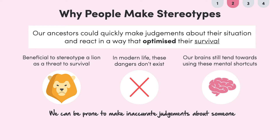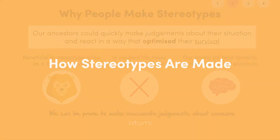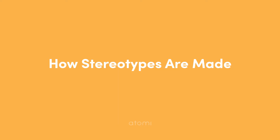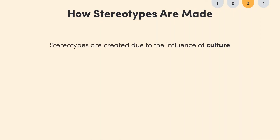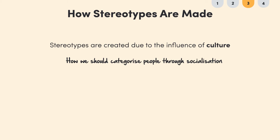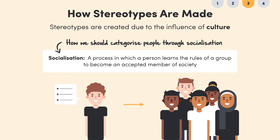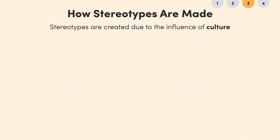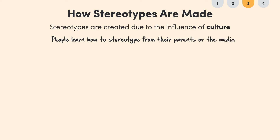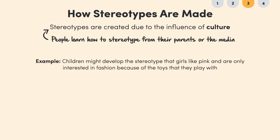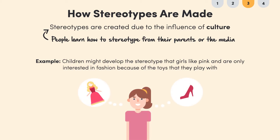We know that humans use stereotypes as mental shortcuts to understand people who are different from us. So how exactly are stereotypes made? One theory is that stereotypes are created due to the influence of culture. We pick up from our cultural surroundings how we should categorize people through socialization. Socialization is a process in which a person learns the rules of a group to become an accepted member of society. People learn how to stereotype at a young age, usually from their parents or the media. For example, children might develop the stereotype that girls like pink and are only interested in fashion because of the toys that they play with.